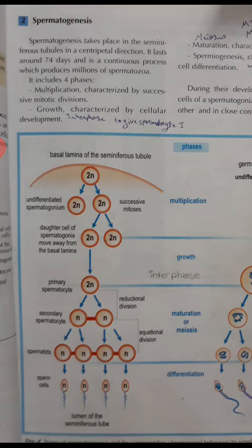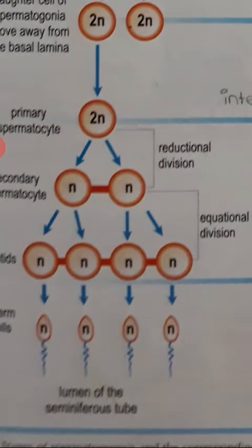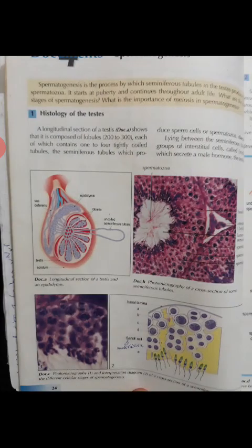The last phase is differentiation. In differentiation, the number of chromosomes remains constant and does not change. The spermatid acquires its structure: it develops a flagellum (tail) that allows it to move and swim.